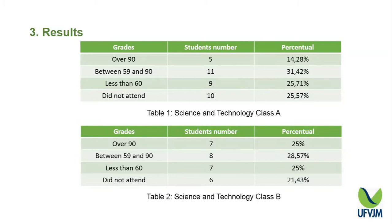In the third stage of this research, the students came back to the classroom and the teacher could evaluate their learning. It was very clear that in Science and Technology Class A, only ten students did not attend the test, and only nine students had a grade less than 60.